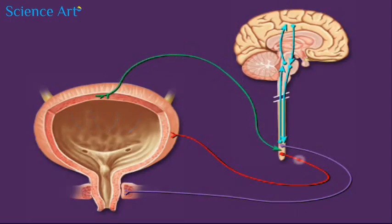In response, parasympathetic neurons from the spinal cord to the bladder are activated, and this causes the smooth muscle on the bladder wall to contract.